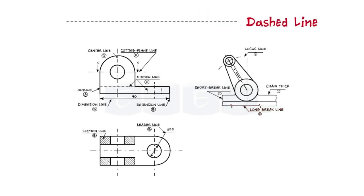Next is the dashed line. This line is used to show hidden edges of the main object.